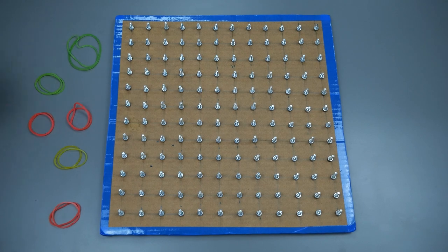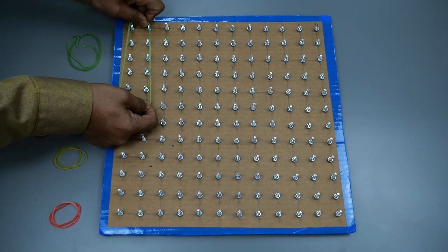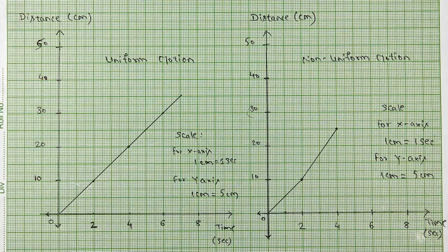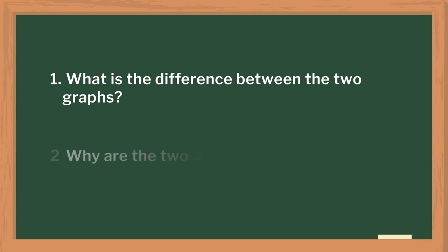We plotted the graphs using geoboards, rubber bands, and different colored beads. In case you need to know how to use geoboards for plotting graphs, kindly visit our maths lesson plans. If geoboards are not available, graph papers can also be used. After plotting the graphs, we discussed what the difference between the two graphs was and why the two graphs were different.